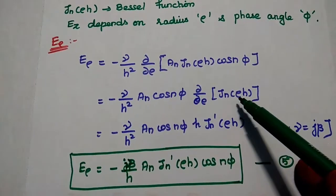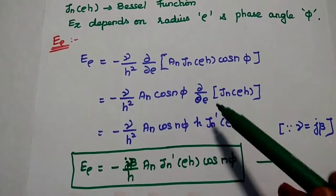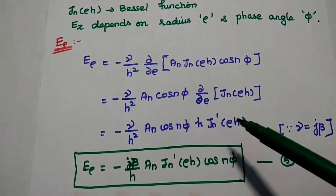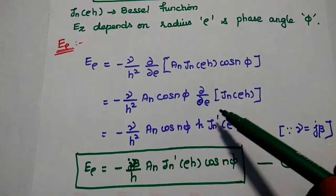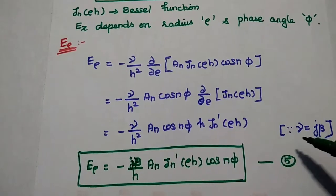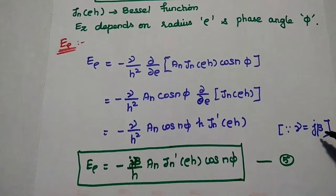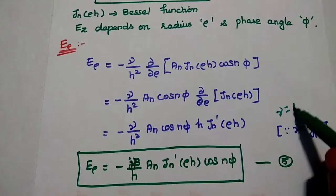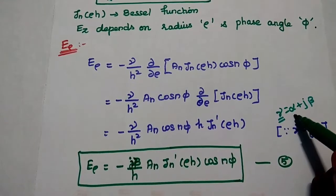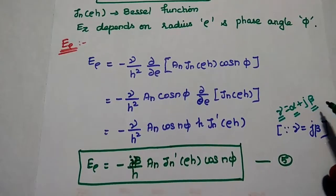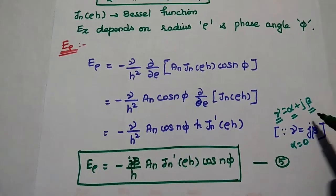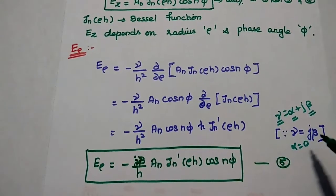We can take H as a constant value, then the differentiation of JN of rho H is H into JN dash of rho H, where JN dash represents the first order differentiated value. Here gamma is equal to J beta. As we know, gamma equals alpha plus J beta — gamma is the propagation constant, the combination of attenuation constant and phase shift constant. In TEM waves, attenuation becomes zero, so it has only the imaginary part and we can write gamma equal to J beta.